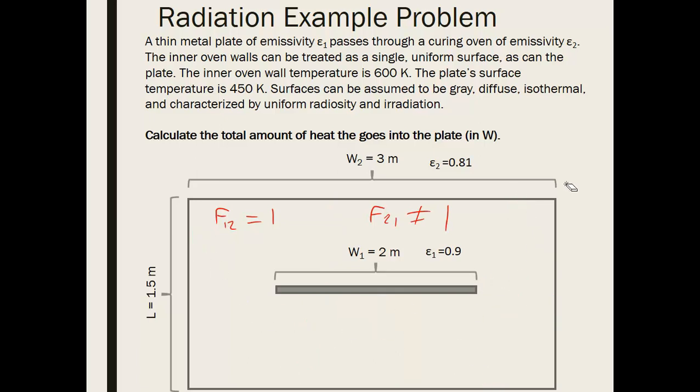So how do we find F21? We are going to use what's called the reciprocity relationship, which states that A1 times F12.